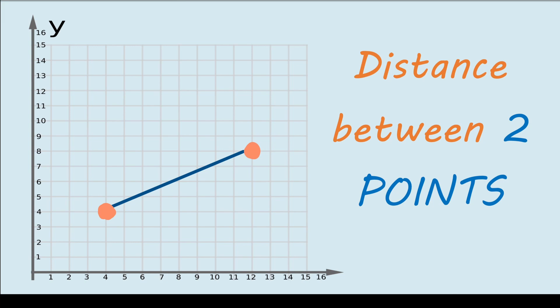Let's talk about the distance between two points. If you have a coordinate plane and two points on it, and you're asked to find the distance between them, you could simply draw a line segment connecting both points and then count how many units you need to go from one point to the other. In this case, that would be one, two, three, four, five, six — so the line is six units long, meaning the points are separated by six units. That's the distance between them. Pretty simple.